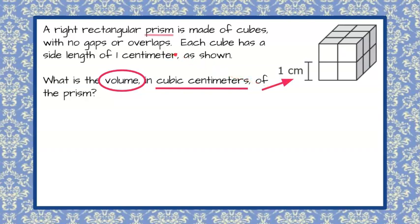So now we're going to go to the information provided and know that we're given a prism that is made of cubes. Remember a cube, all sides are the same. There's no gaps or overlap, meaning there's no spaces and they don't overlap. It's just a bunch of cubes all put together.